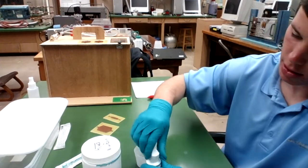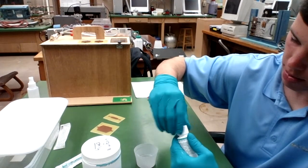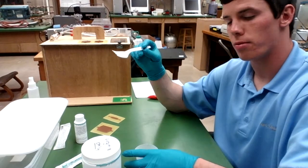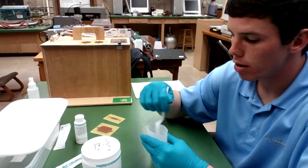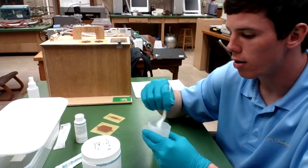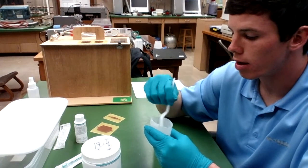Now that I've mixed the PDMS at a 10 to 1 ratio, my job is to stir the mixture for about five minutes using this plastic fork. You want to stir it up so that you get lots of bubbles, ensuring that the curing agent has been mixed very thoroughly throughout the elastomer base.